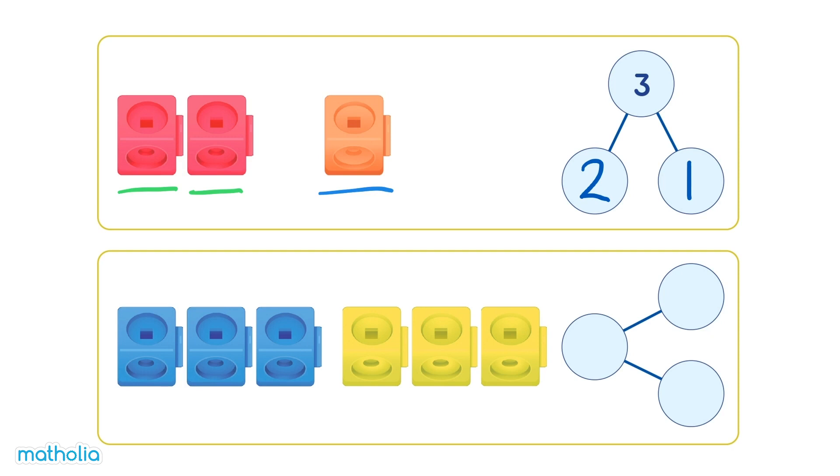Here we have one, two, three blue cubes. And one, two, three yellow cubes too. Three and three make six.